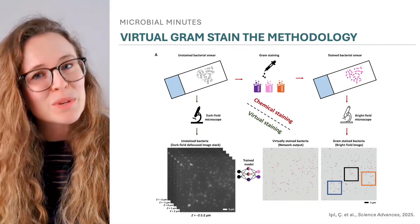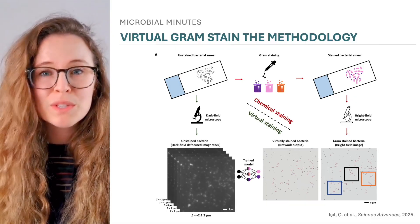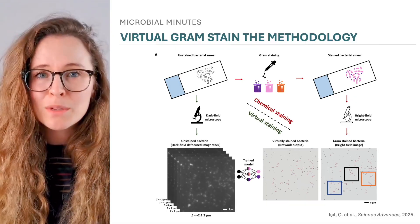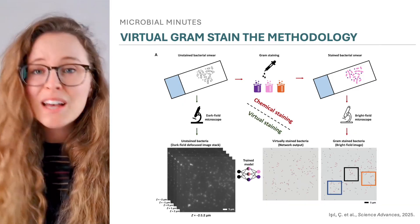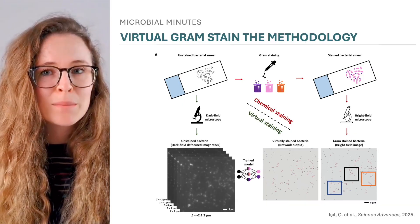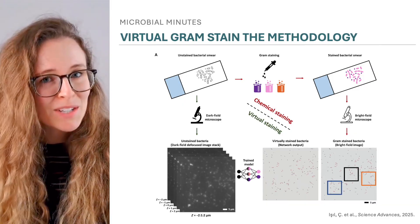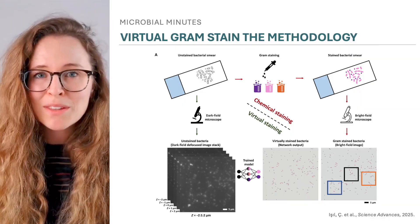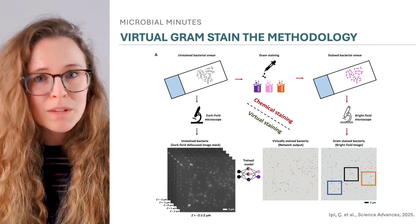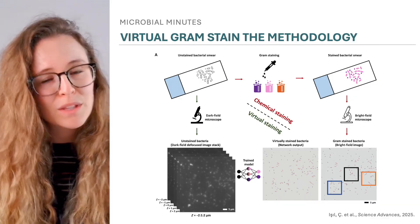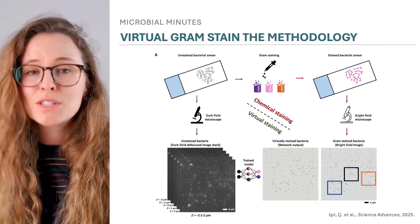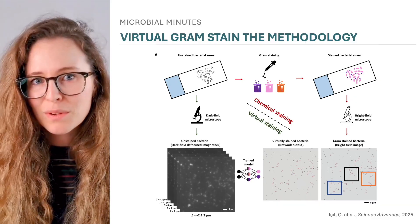In this study, researchers trained a deep learning model using stacked dark field microscopy images of unlabeled bacteria, as well as corresponding bright field images in which the bacteria had been gram-stained using traditional methods. The experiments used two bacteria, either alone or mixed together: E. coli, a gram-negative, and Listeria innocua, a gram-positive.